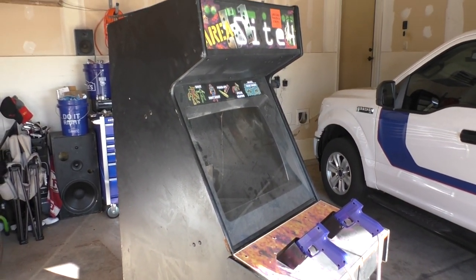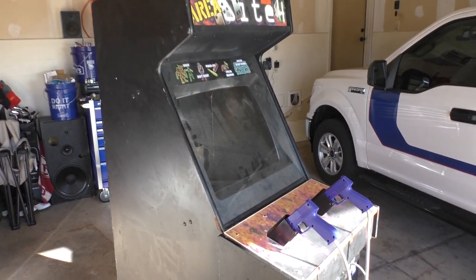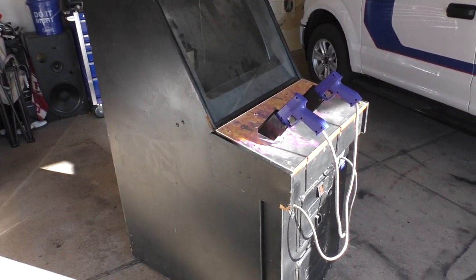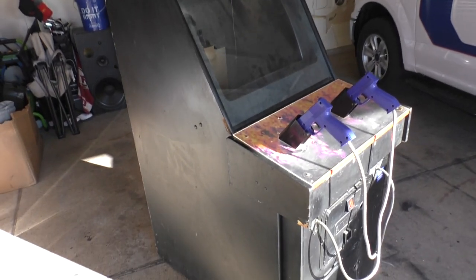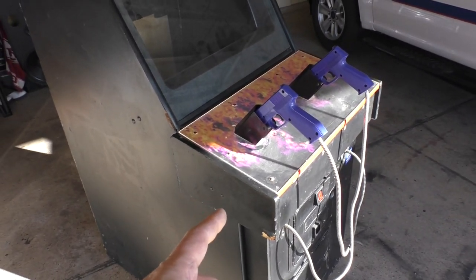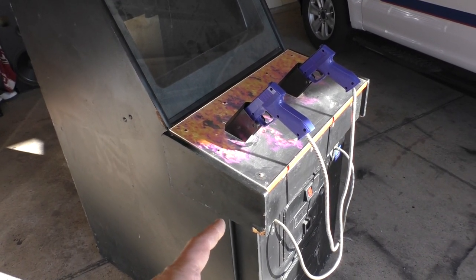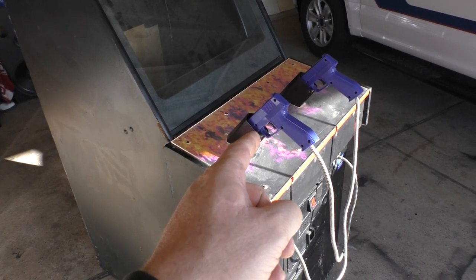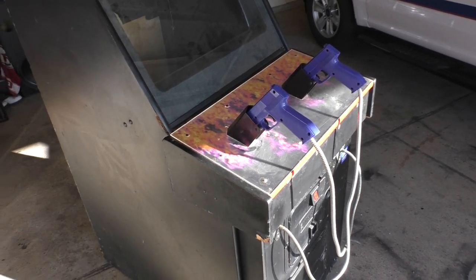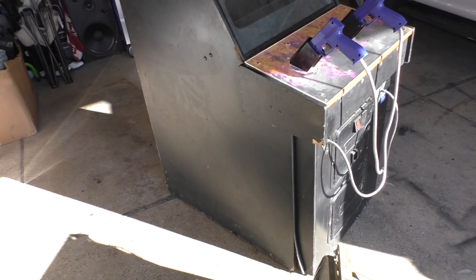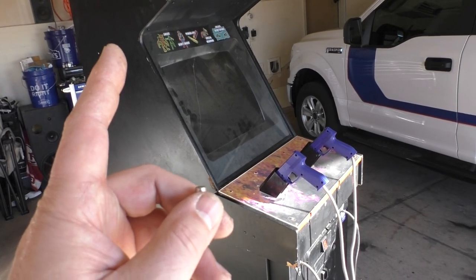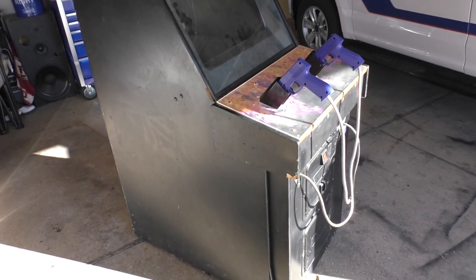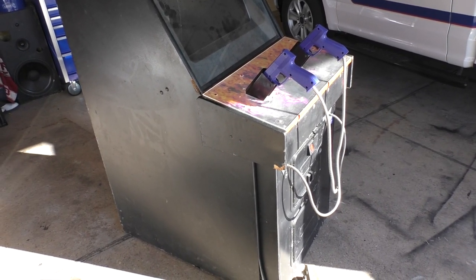All right gang, so last night I picked up an Area 51 that's in an NFL Blitz cabinet. Someone converted this NFL Blitz cabinet to Area 51 at some point in the past. What's odd is that it has an MK4 Mortal Kombat 4 control box and a Mortal Kombat 1 control panel. I don't know how this conglomeration of stuff came together, but it's an NFL Blitz cabinet with a monitor that died. So I got this on Facebook Marketplace from a guy for $160.